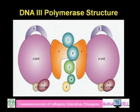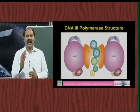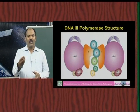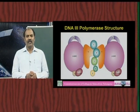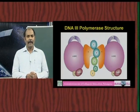DNA polymerase 3 is made up of different types of subunits — it is a heteropolymer. Its subunits include alpha, beta, gamma, delta, tau, and epsilon. The major subunit is alpha, which contains the polymerization activity. Because of this polymerization activity, it undergoes phosphodiester bond formation using incoming nucleotides, which are deoxyribonucleoside triphosphates (dNTPs) — guanine, cytosine, thymine, or adenine.